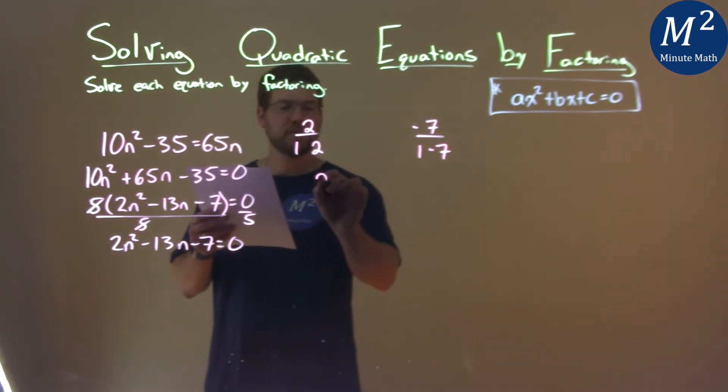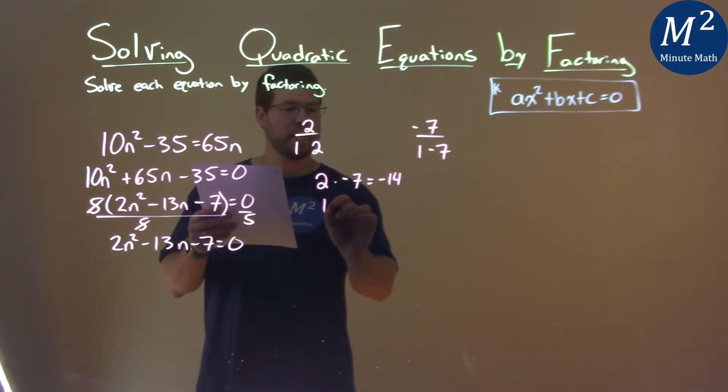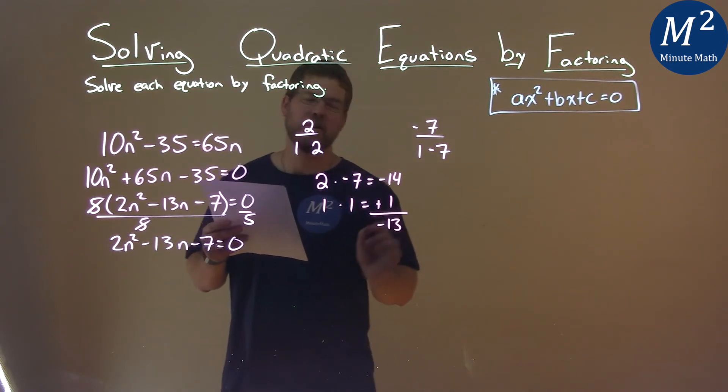So we take 2 times negative 7, and that's equal to negative 14. 1 times 1 is positive 1. We add them together, and we got our negative 13.